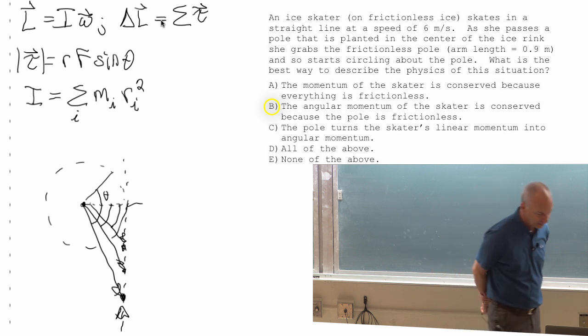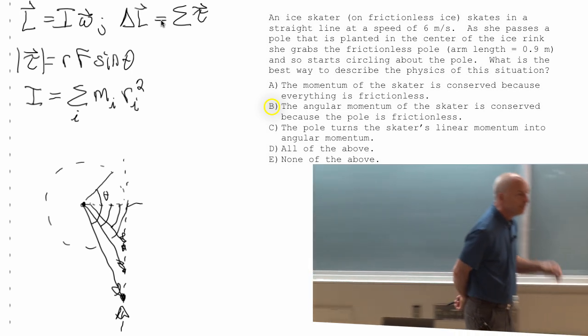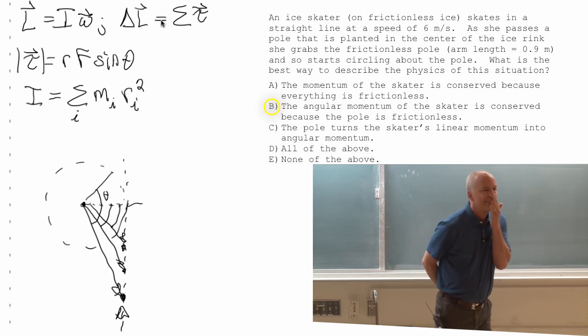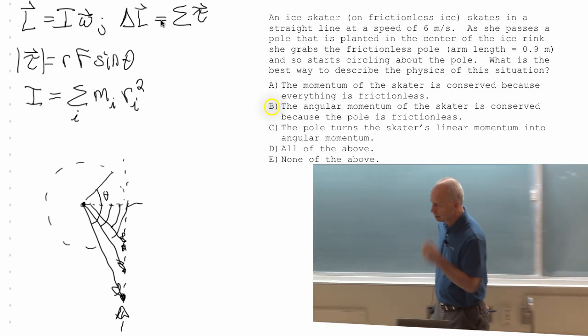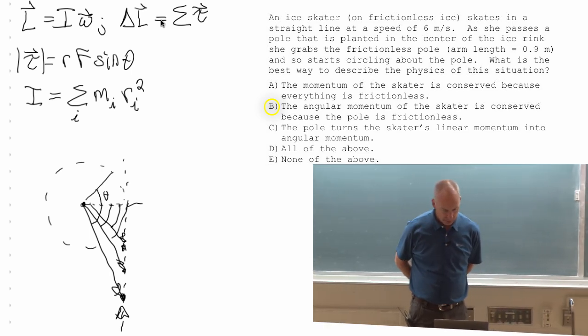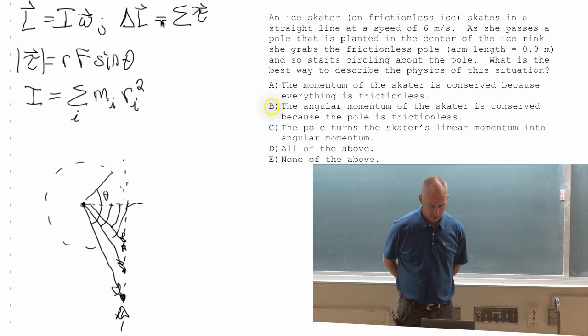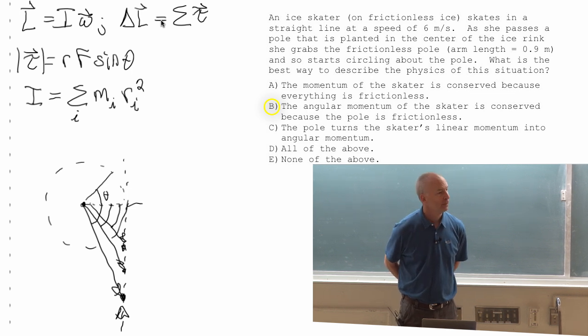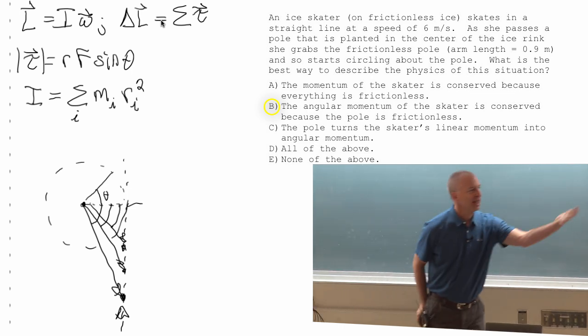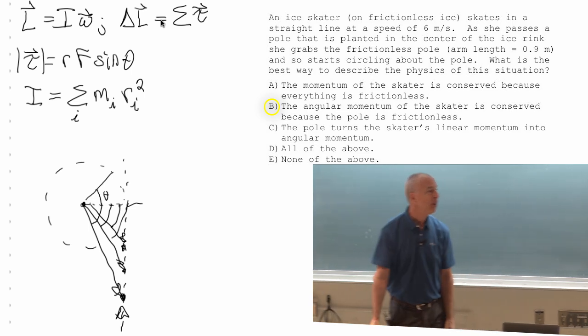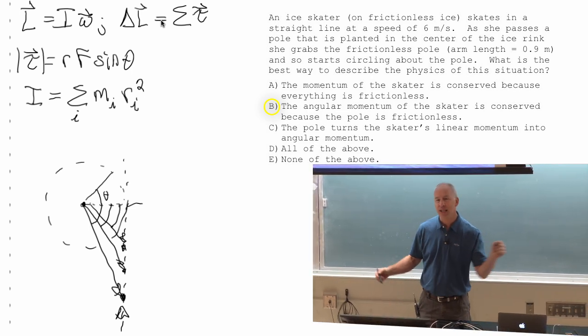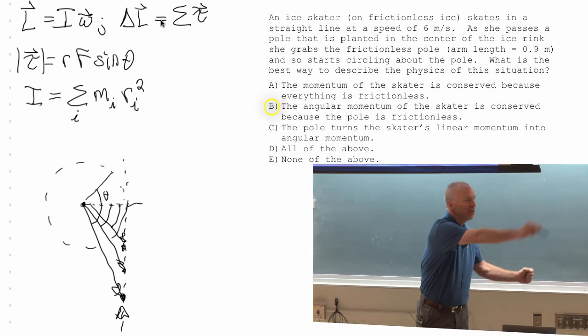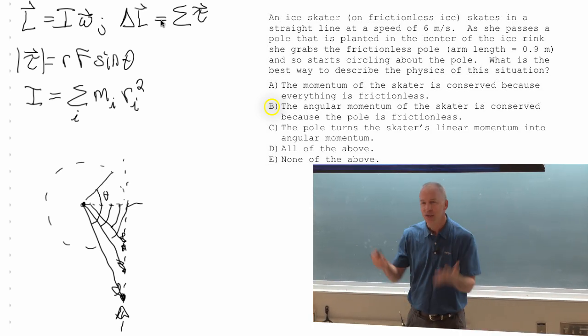Yeah? So does that mean that at any time an object is moving in a straight line, you can just arbitrarily pick a point and say this is the pivot point, and now I have angular momentum around this pivot point? You can't. So in answer to that, let's think about the pivot point. I chose the pole. Why did I choose the pole? Because later on, she's literally circling the pole. So it's a good point to pick for later on.